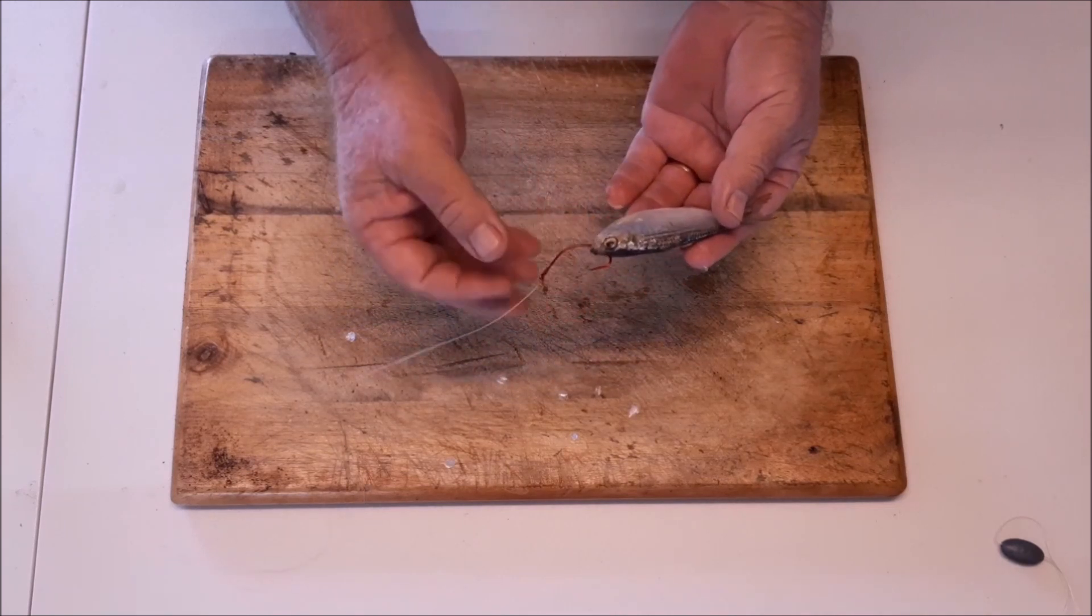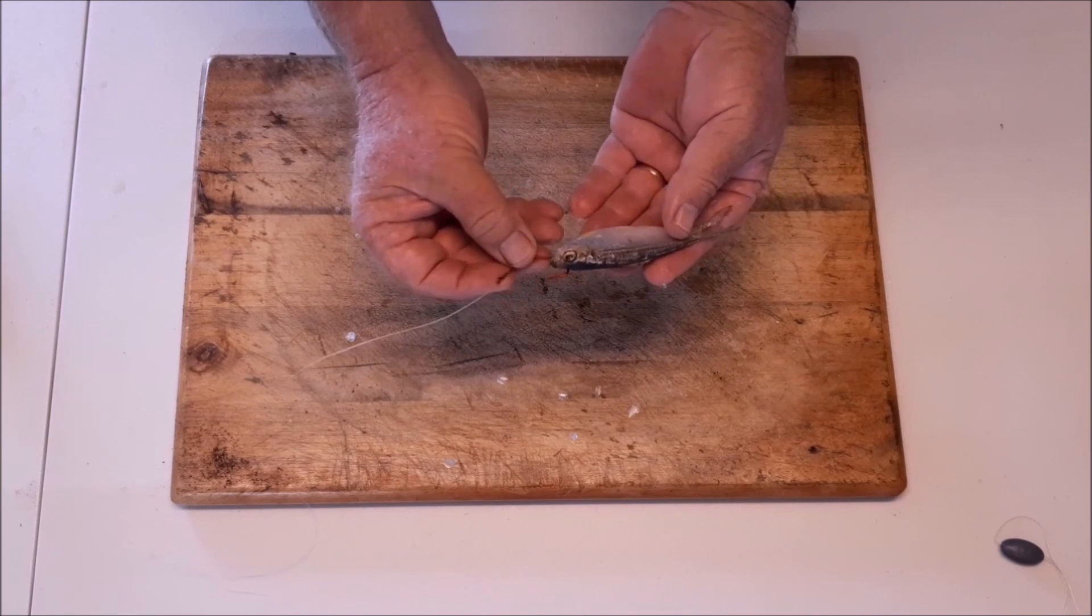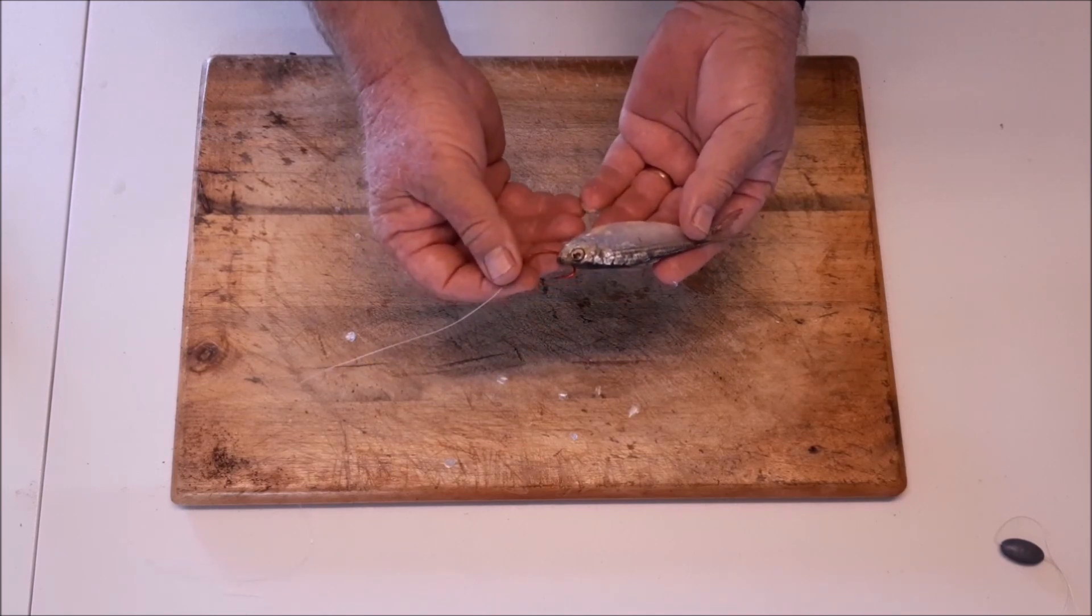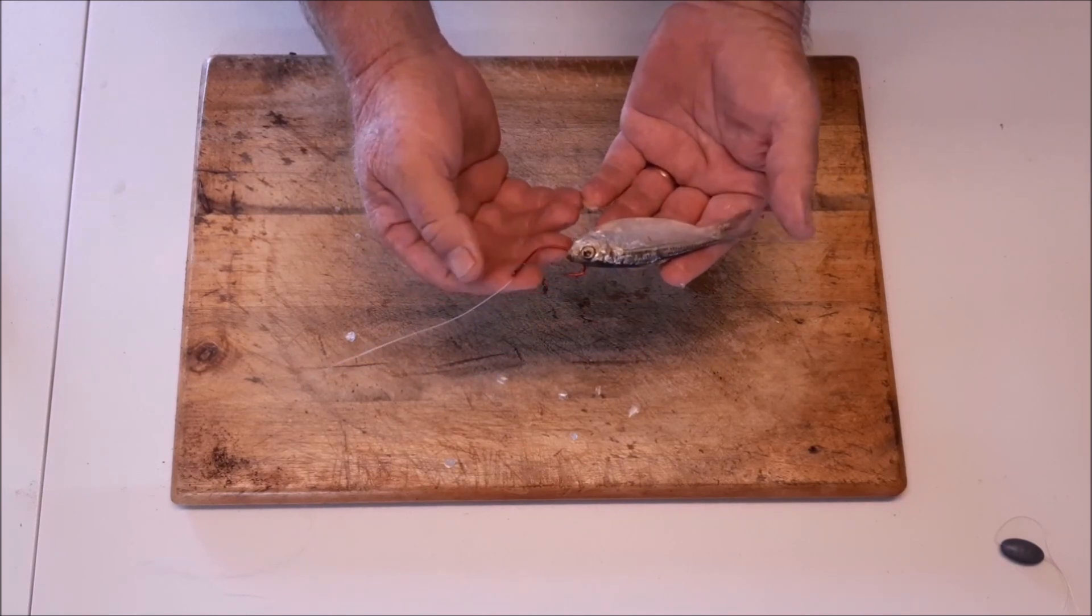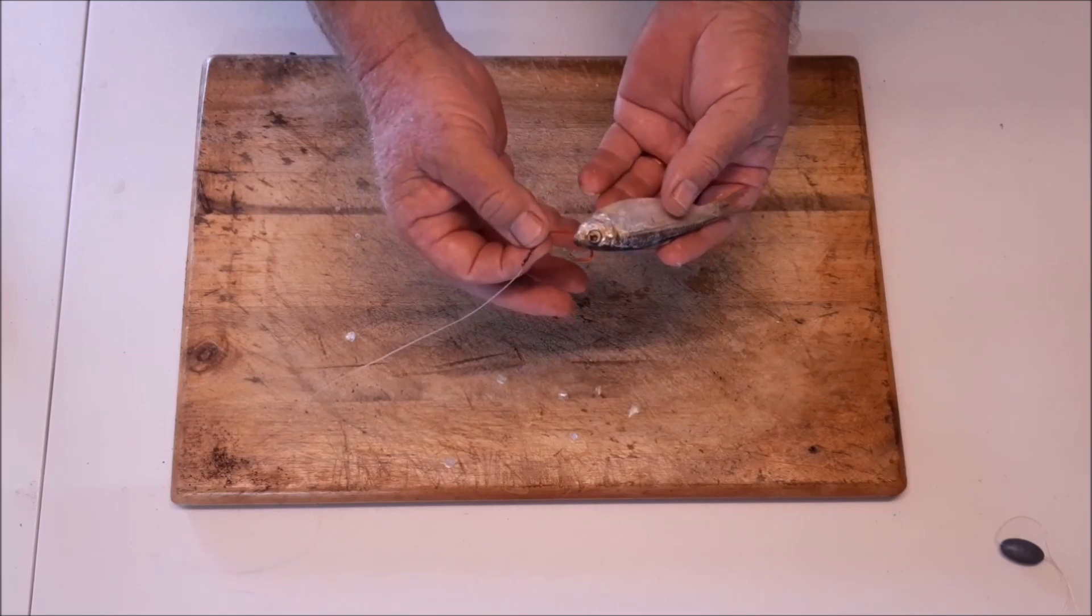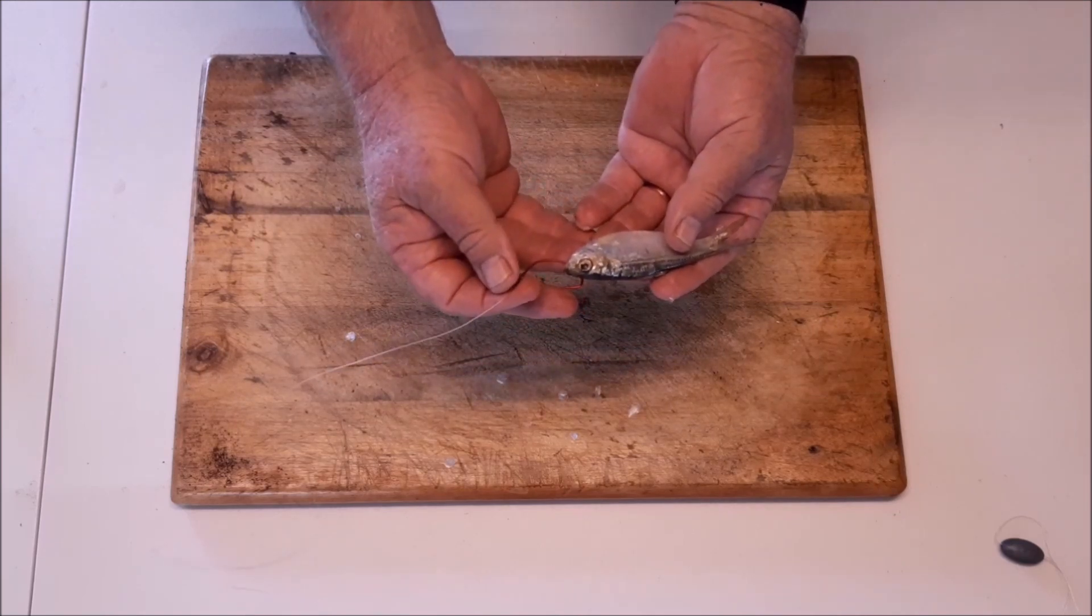They do catch the fish in the corner of the mouth. Very seldom do I find that they actually gill or gut hook the fish. They always seem to catch them on the corner of the mouth, and being thin wire they do rust off if they do get caught in the fish.